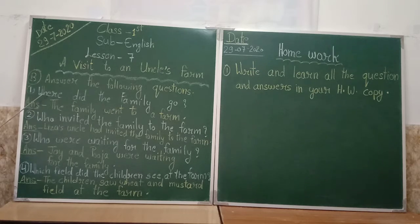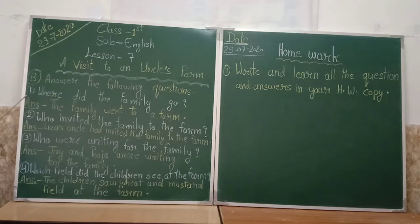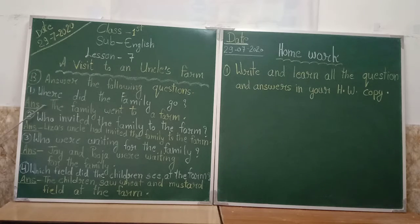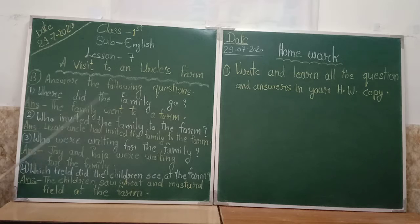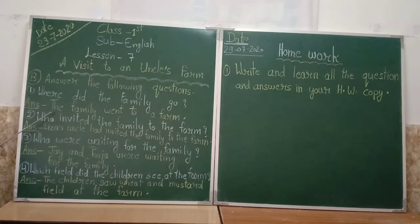Okay, number one — where did the family go? Ab yeh jo family tha, woh kahan gaya tha? Ab uska answer hai: the family went to a farm. Woh family, woh pariwar, ek farmhouse mein gaya tha field ko dekhne ke liye.